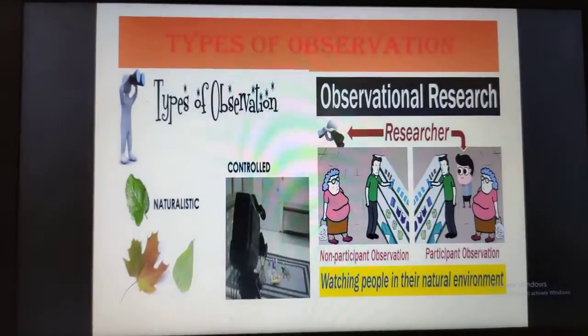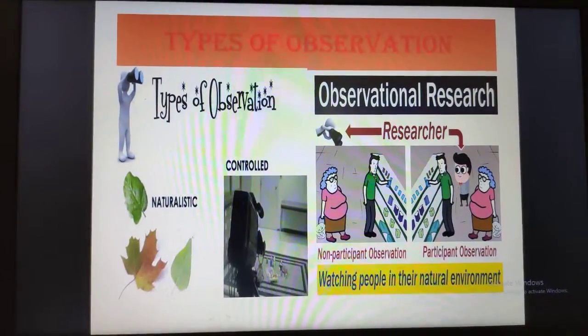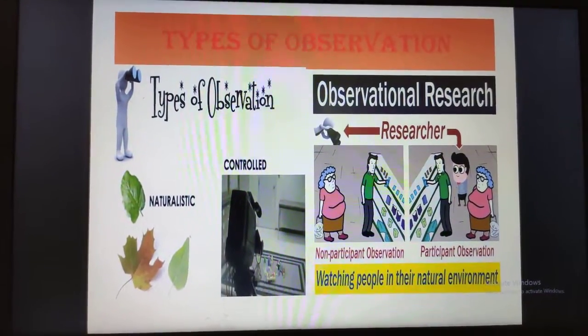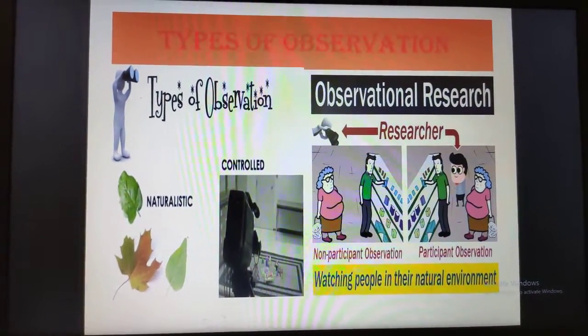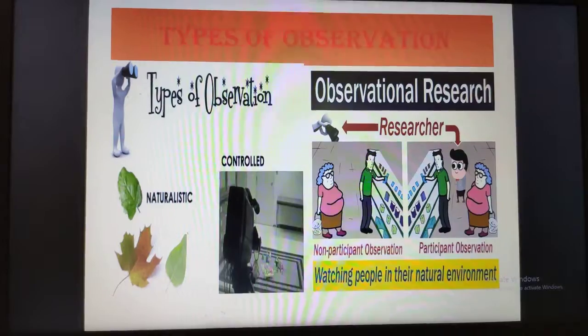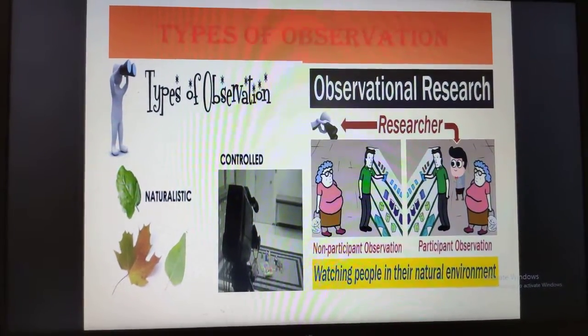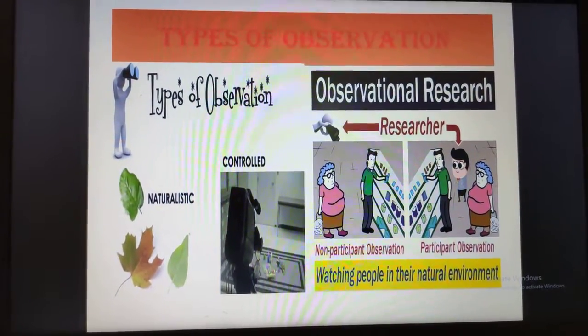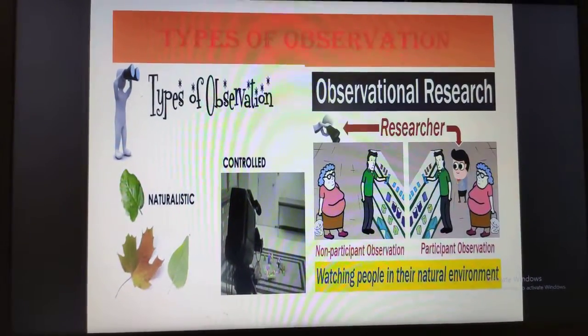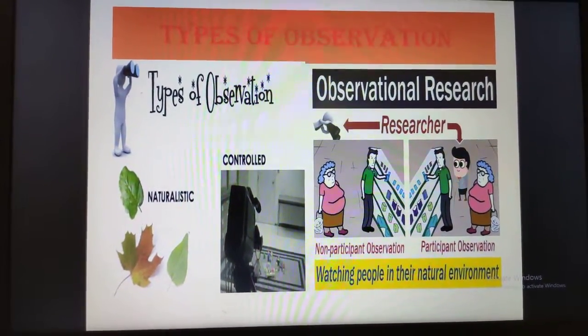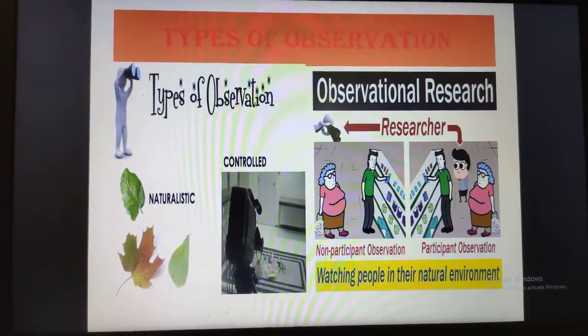We are going to concentrate on types of observation, as you can see from the slide. It is of two types: naturalistic versus controlled, and non-participant versus participant observation.